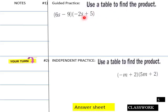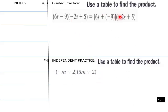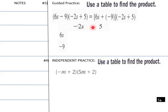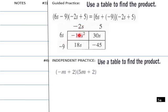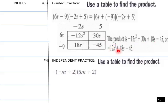Into our first guided practice: use a table to find the product of these two binomials. Students, pay attention so you can do yours. Here are your tables. We have 6S plus a negative 9, and negative 2S plus 5. So: 6S times negative 2S is negative 12S squared. 6S times 5 is 30S. Negative 9 times negative 2 would be 18S. Then negative 9 times positive 5 would be negative 45. Combining like terms gives us negative 12S squared plus 48S minus 45 as the final product.